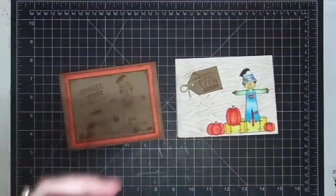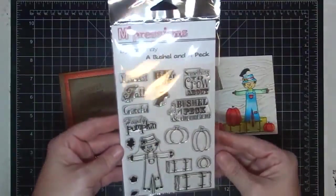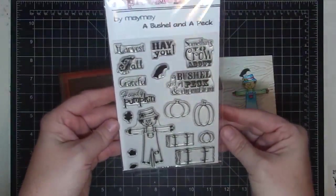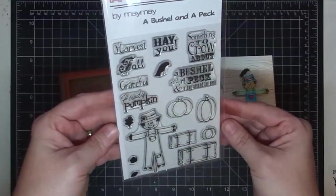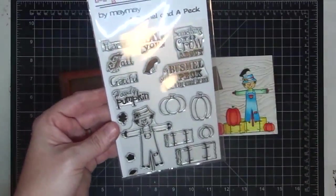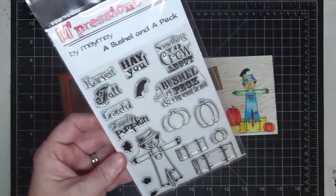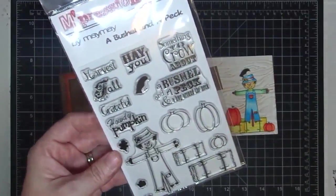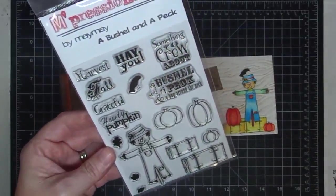But anyway, this is my new stamp set. Let me just show you, get the housekeeping out of the way. This is it. It is called A Bushel and a Peck. And I named it that because when I was little, my grandmother used to always tell me, I love you a bushel and a peck and a hug around the neck.